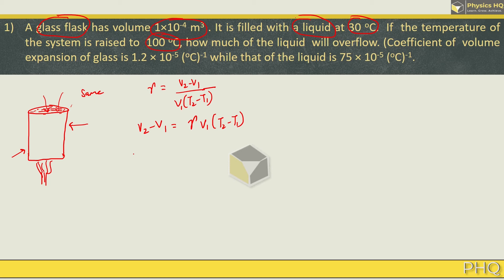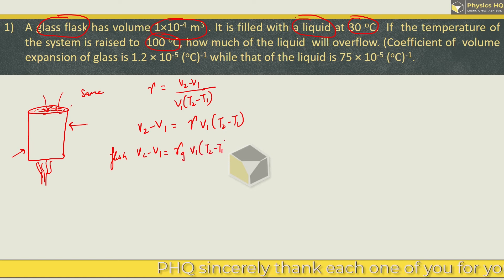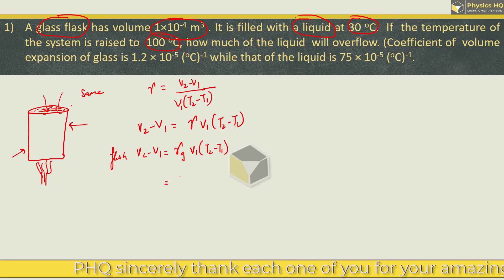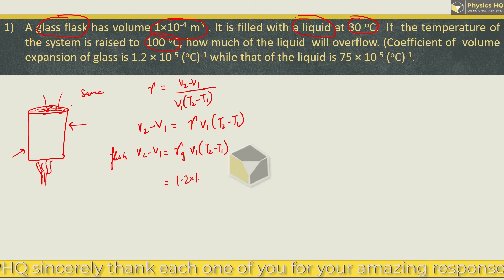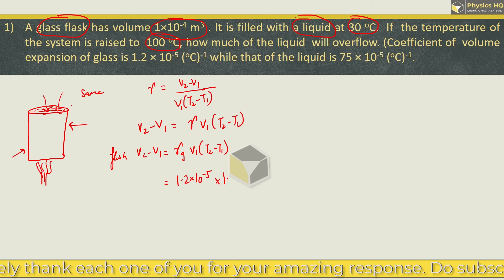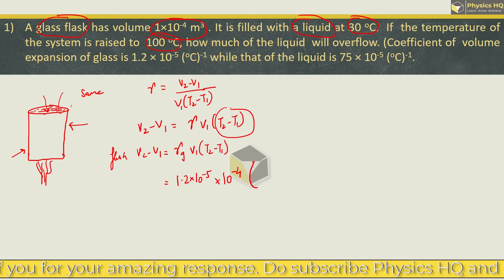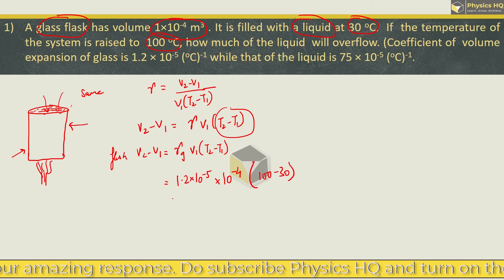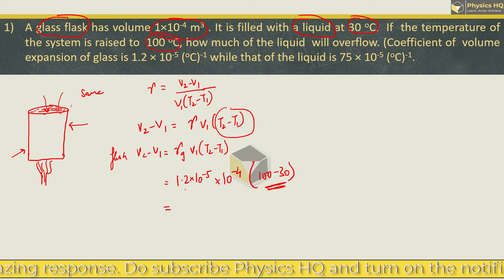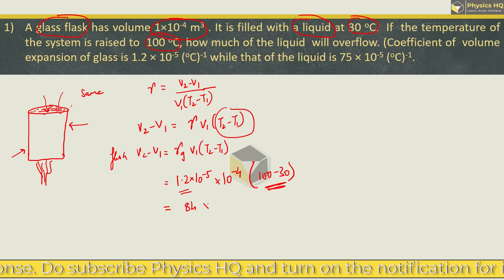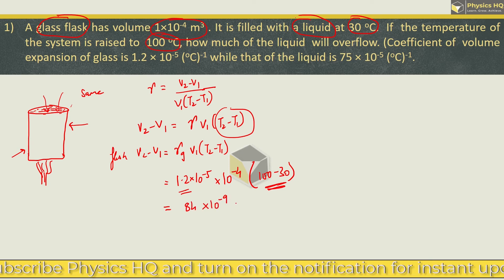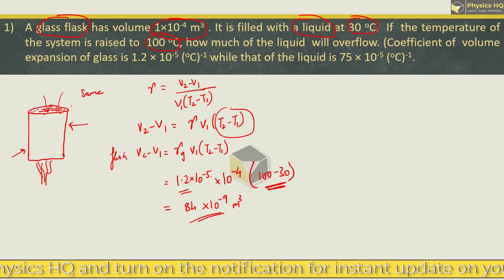Now, let us find out the change for the glass flask, V2 minus V1. So that will be gamma for this glass times initial volume times T2 minus T1. Let us put all the values. Gamma for this glass is given as 1.2 into 10 raised to minus 5. Volume is 10 raised to minus 4. The change in temperature is 100 minus 30 which is 70. When you multiply this 70 with 1.2, we get 84 and 10 raised to minus 9. This is the change in volume of the flask.